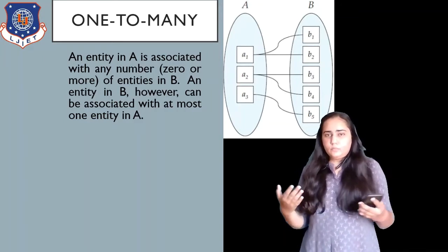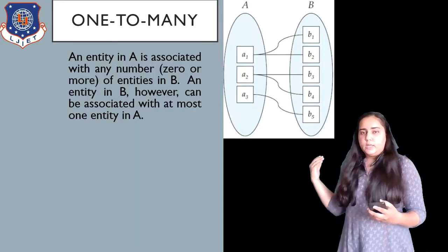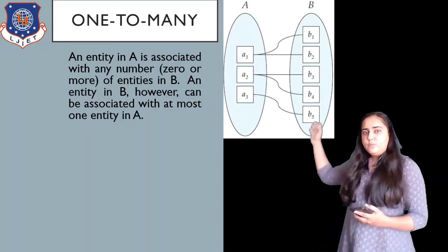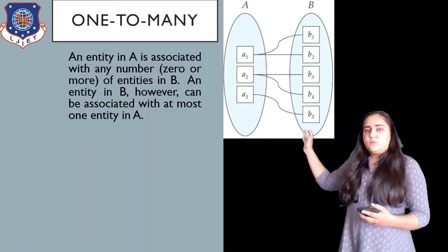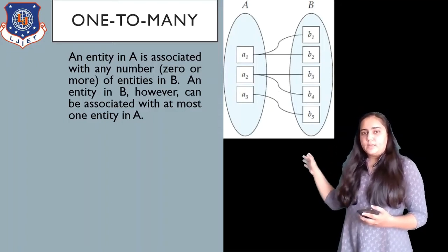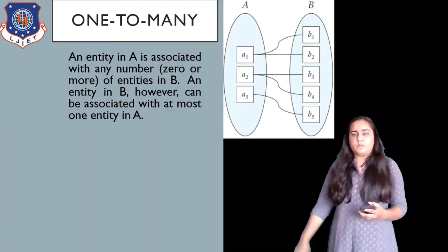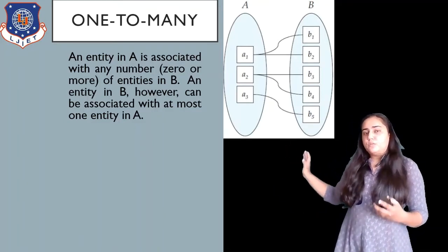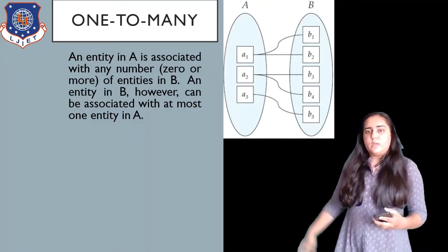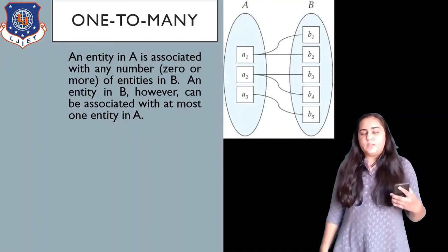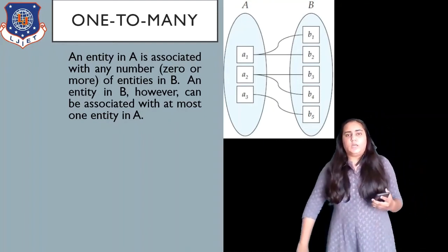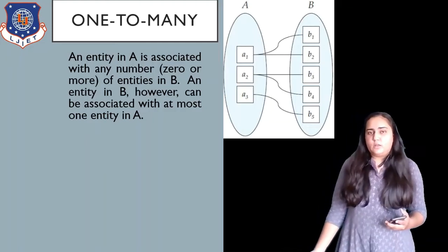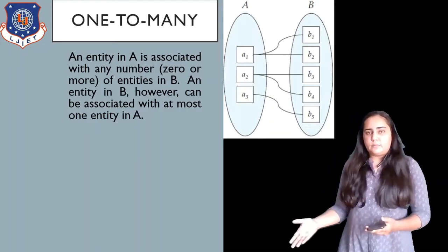From the B side, every entity is associated with only one entity. B1 is only connected with A1, and B3 and B4 are only connected with A2. So this is a one-to-many relationship when you look at it from A to B.